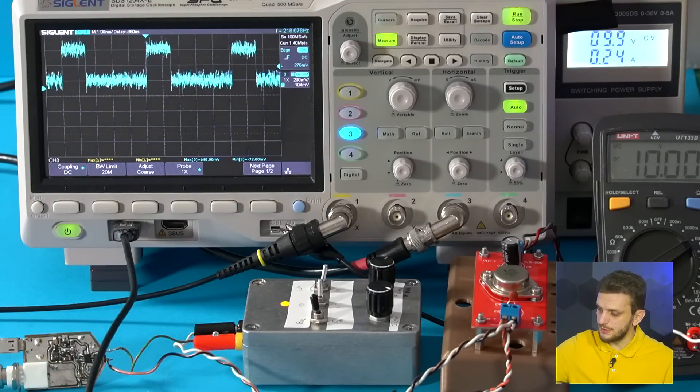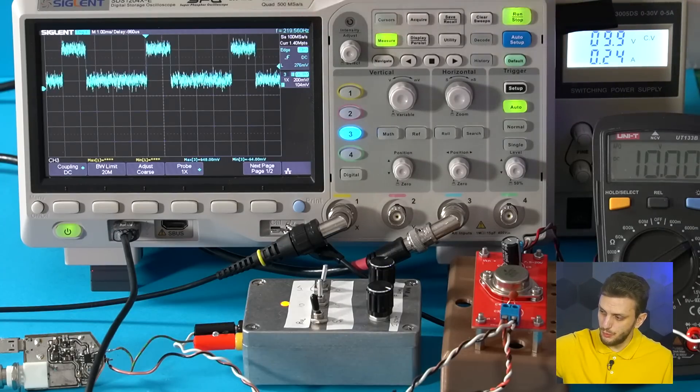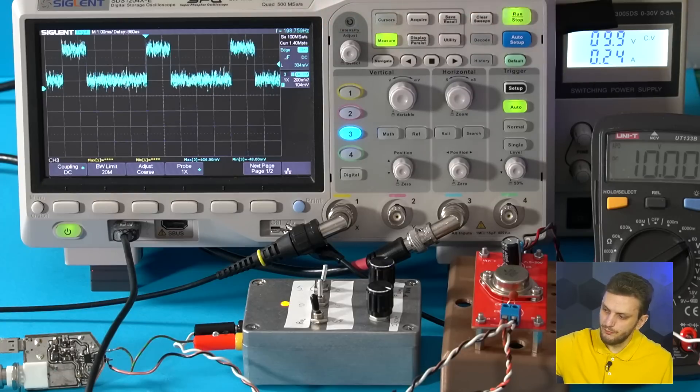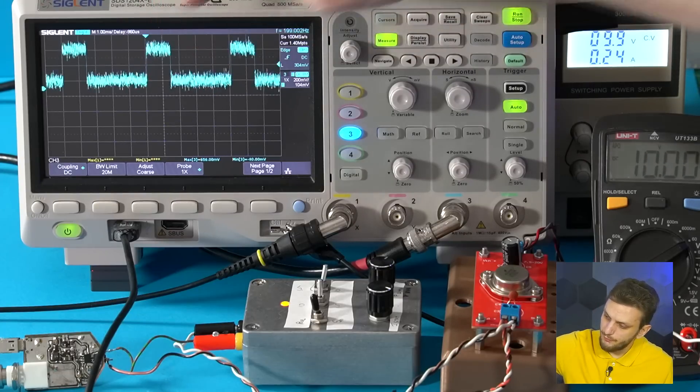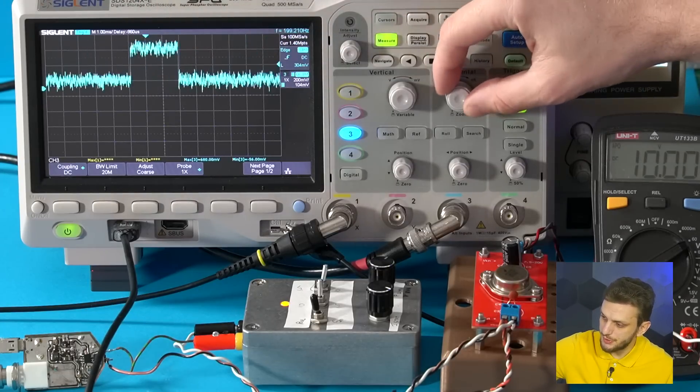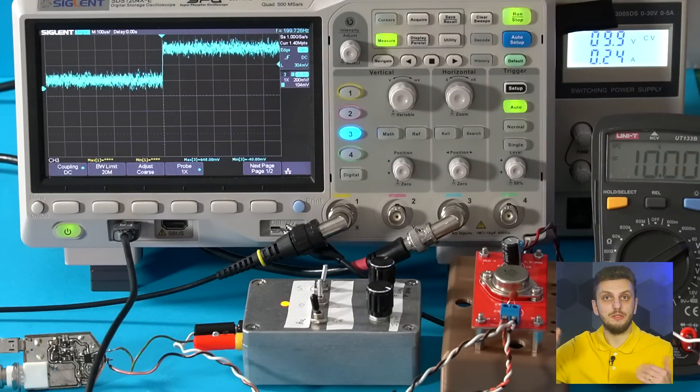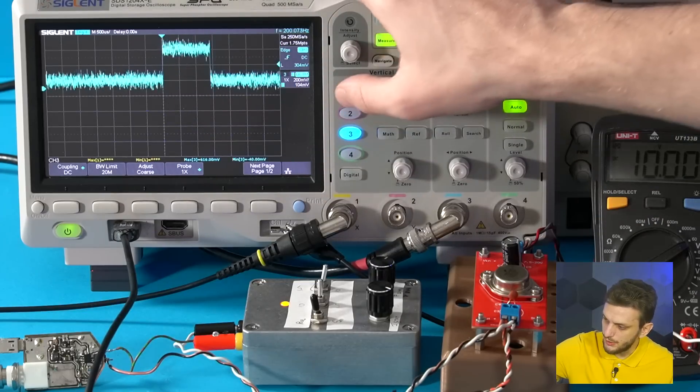So when we turn on the supply, first thing to adjust and confirm is the current waveform. So we're interested in the high and low levels, as well as the transition times. So the exact slope with which current goes from one level to the other. Another thing to observe, when looking at the output voltage,